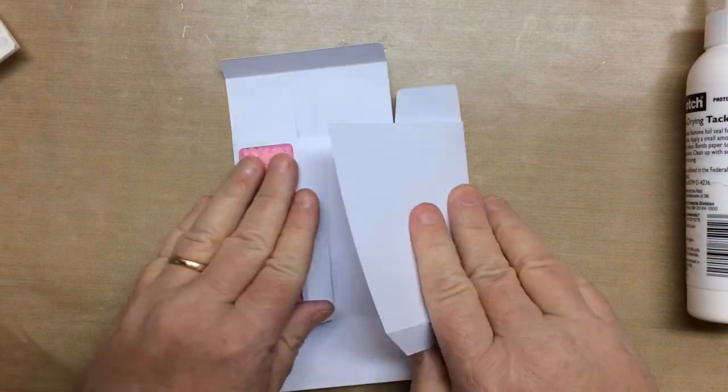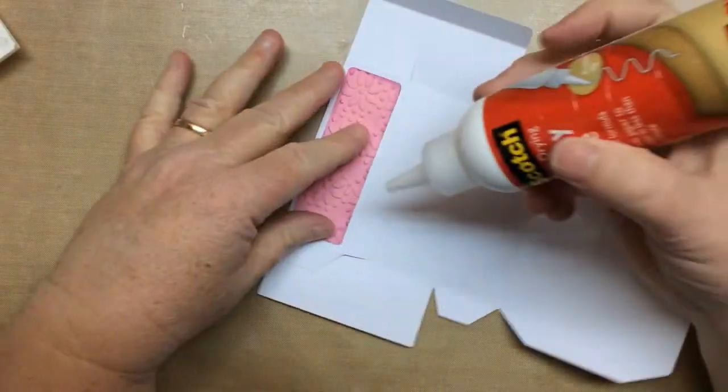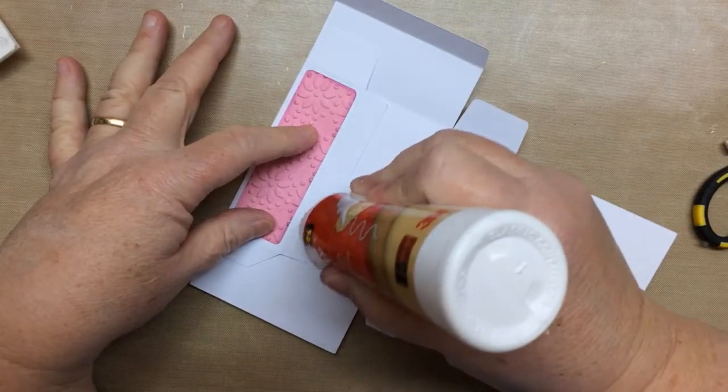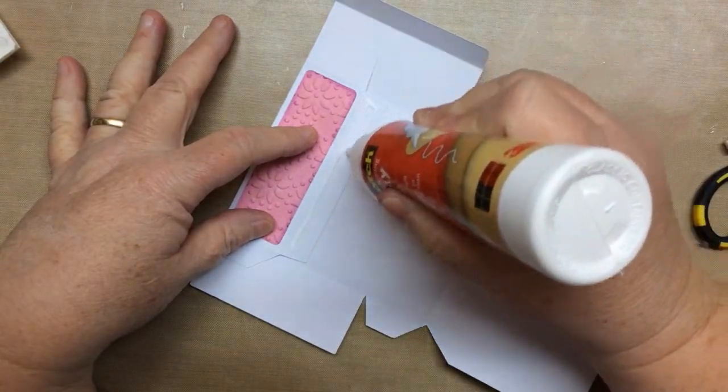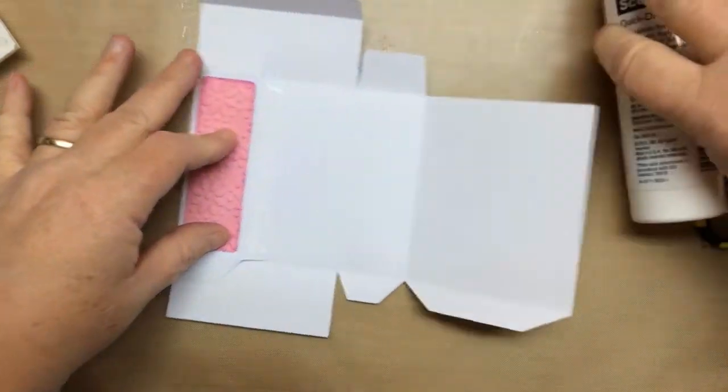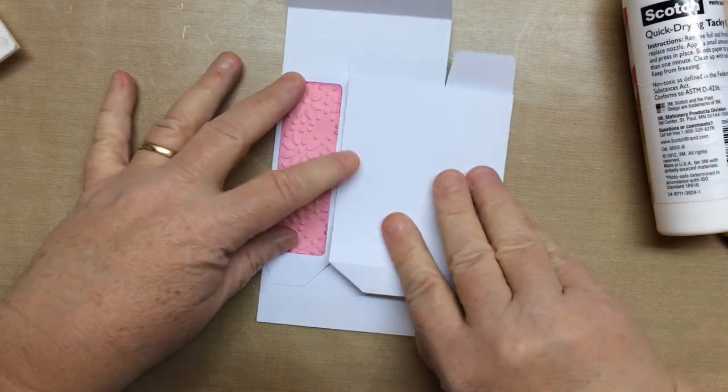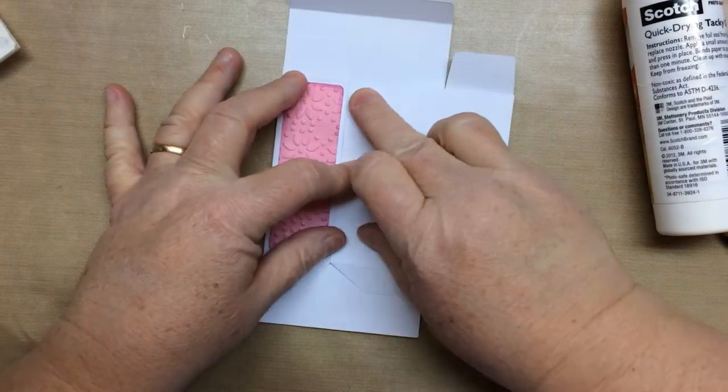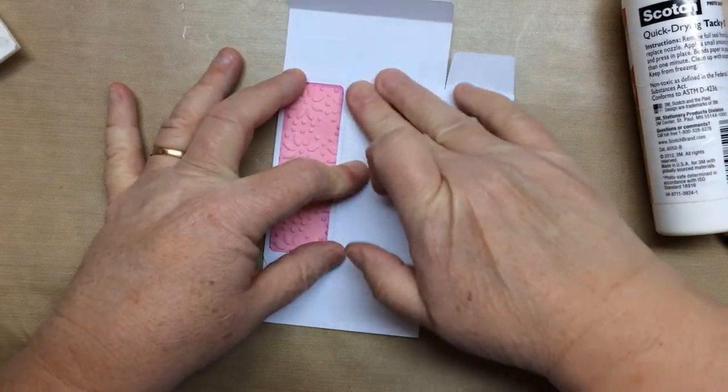And now we'll create the actual, close the box. So you can see, you can just fold it flat, one side over. And then we'll add glue to that side tab. Then it will fold over quite perfectly to match up that edge with the tab fold.